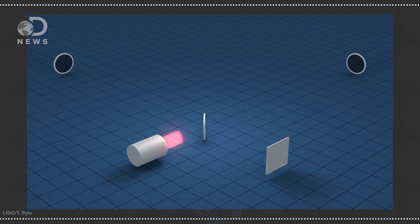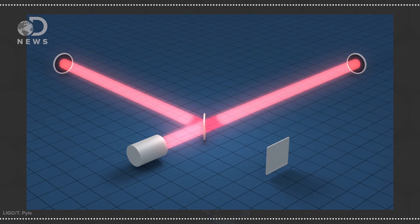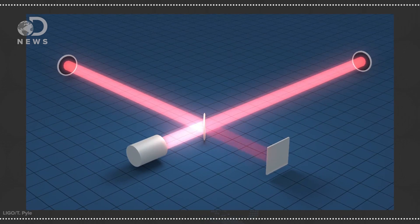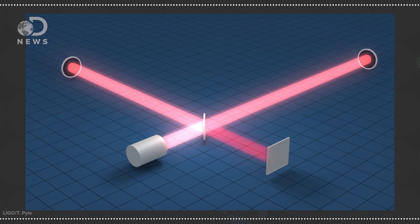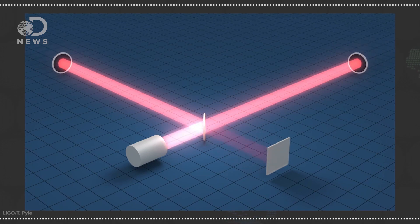LIGO was able to detect such a tiny wiggle by using two labs. One in Livingston, Louisiana and one in Hanford, Washington. The labs used massive and precise lasers. Like 2.5 mile long laser beams that can read 10,000 times smaller than a proton. These lasers were fired into two L-shaped pipes that bounced light around a series of mirrors. A strain in space-time would change the timing of when the lasers reached their destination. And that's just what happened on that fateful day.